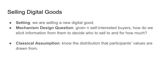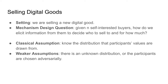Classical mechanism design work on this problem would assume that you know some distribution that people's values are being drawn from, and it would use that to design a mechanism. Over time, theory work has tried to weaken this kind of assumption, because this is quite a strong thing to assume when we have a brand new good that has never been brought to market before.